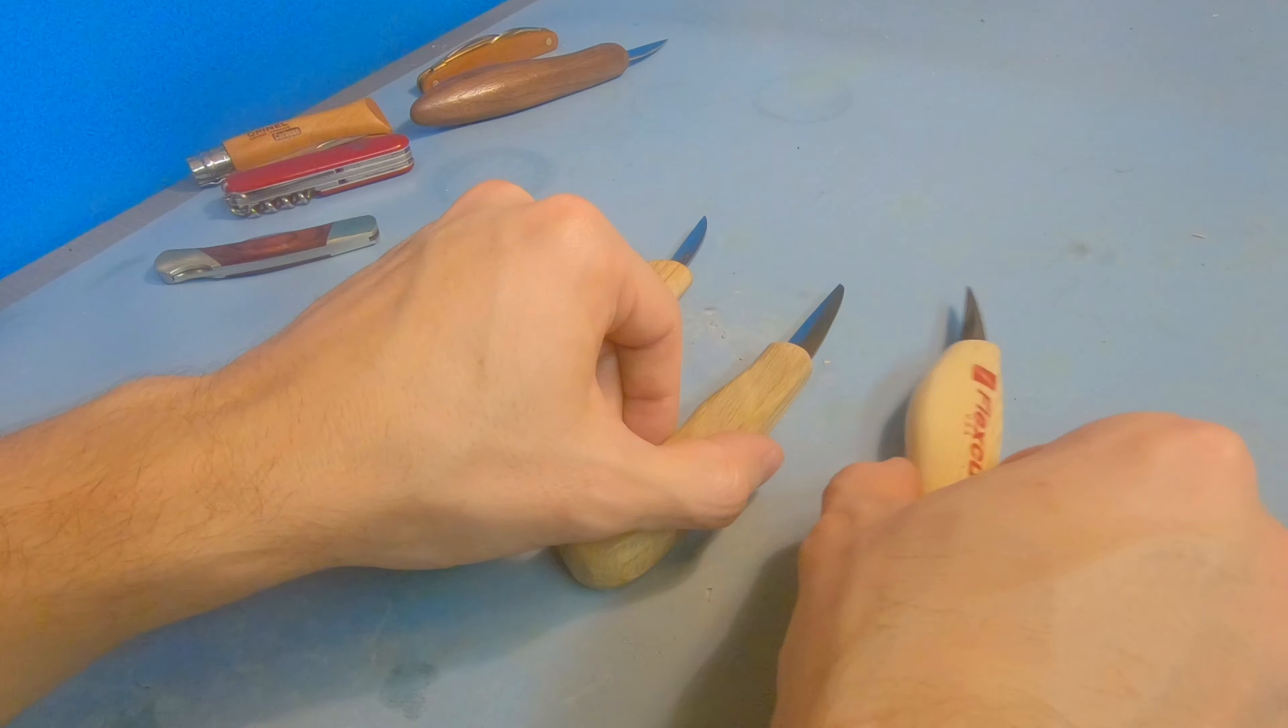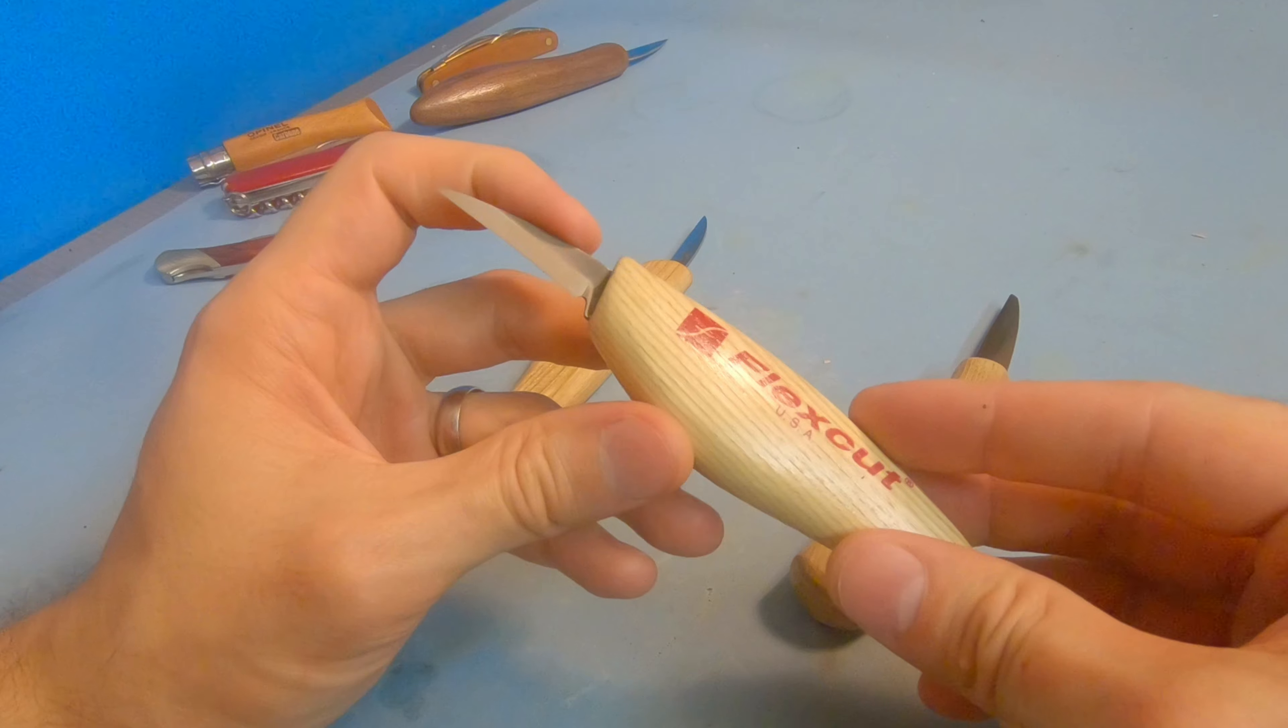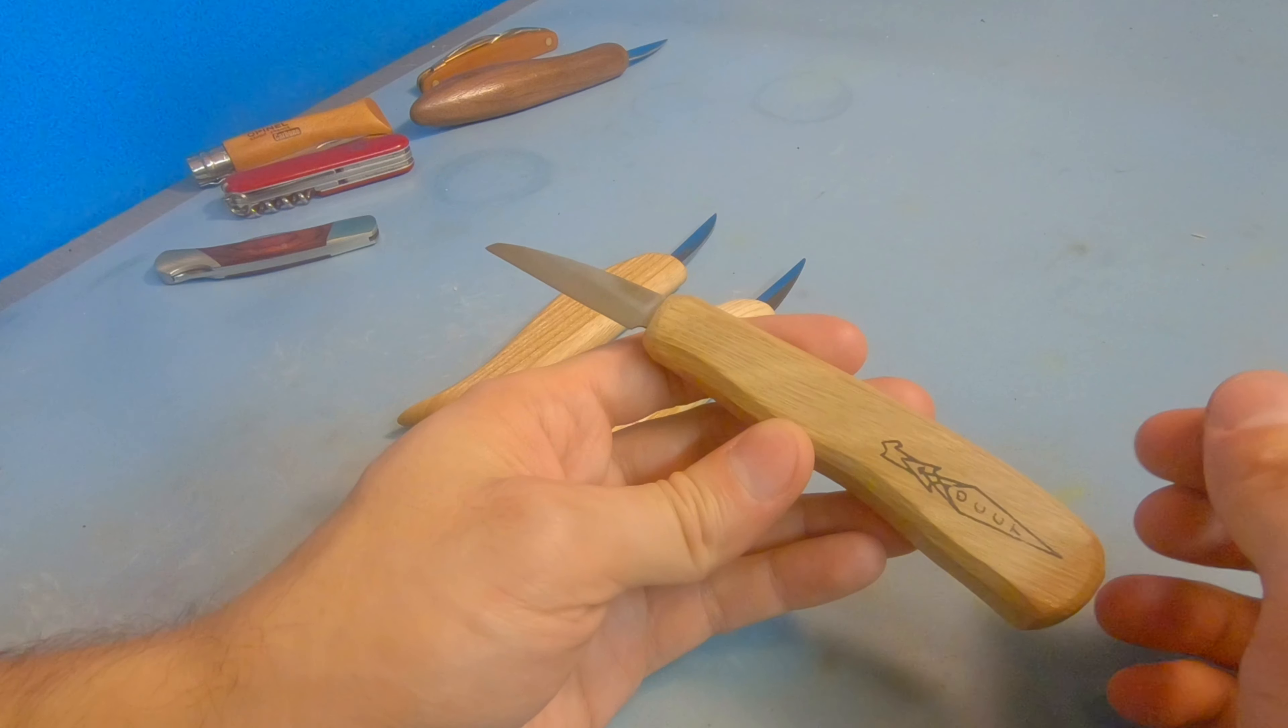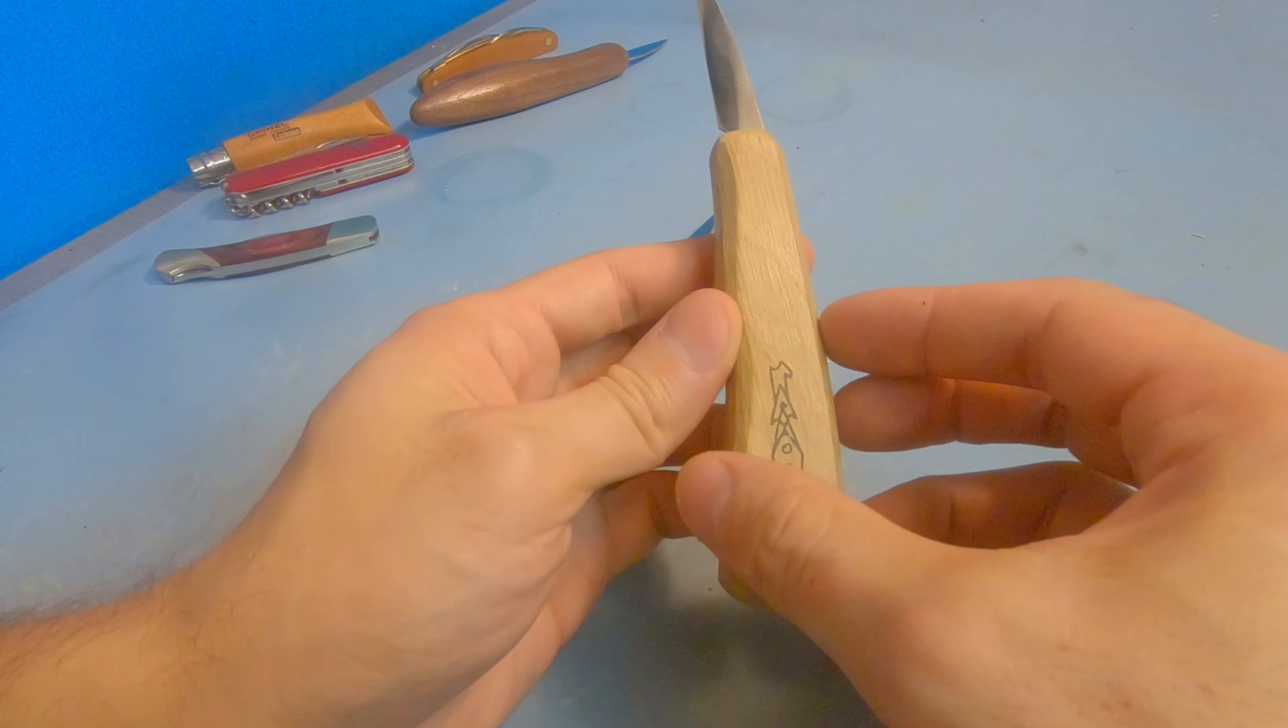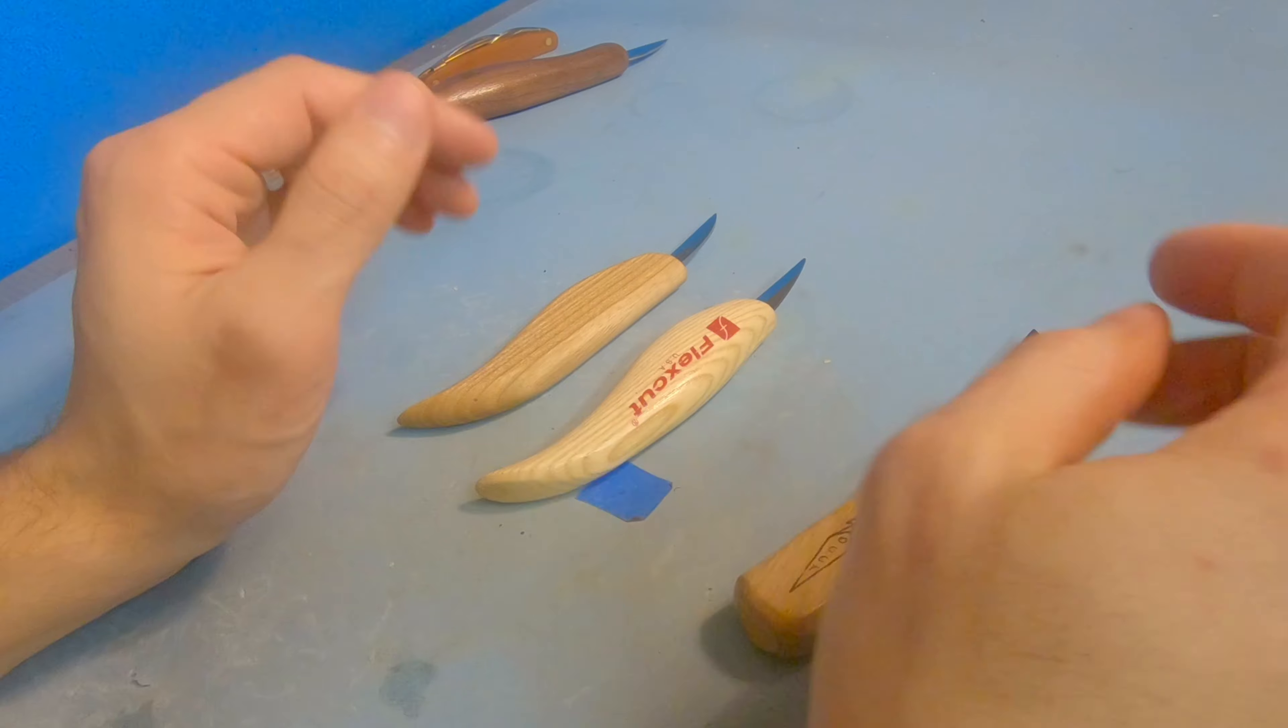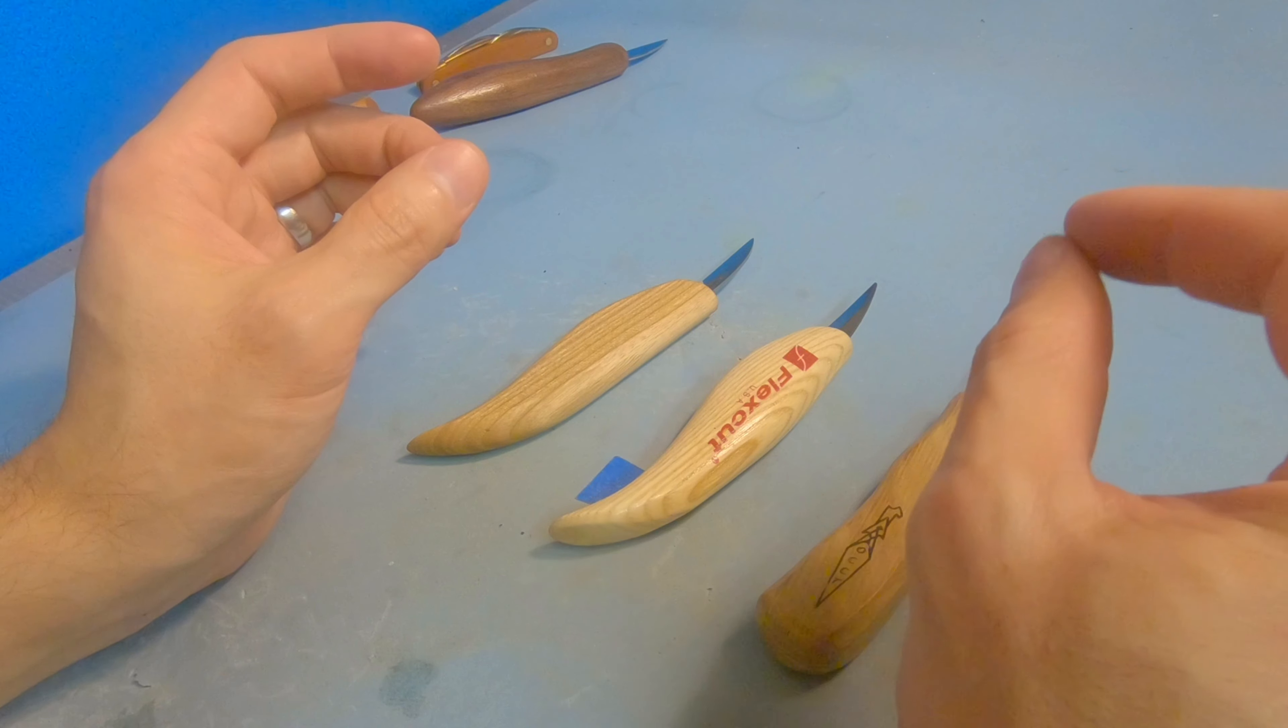If you're on a budget, Beavercraft all the way. It's going to be one of your best options for getting a good quality whittling knife at a great price. FlexCut would be the next step up. They have a bit better steel and a bit better blade design than the Beavercraft ones. And then another one I really like is OCC Tools. Great option. These are the ones that usually end up in my hands over any of my other whittling knives.